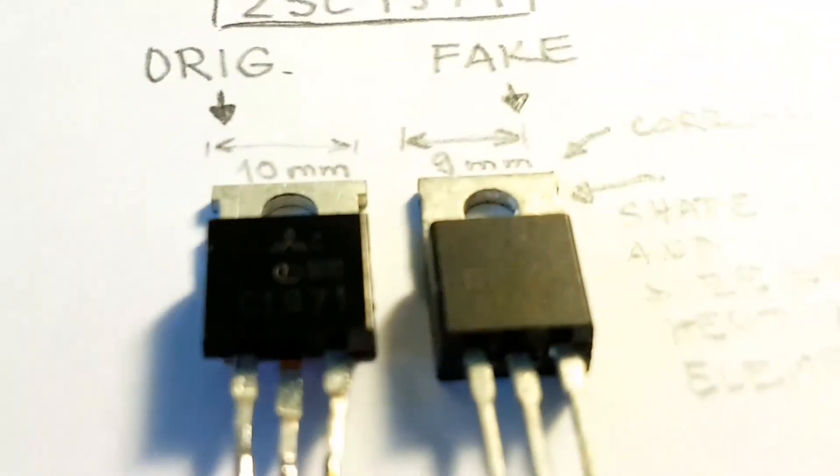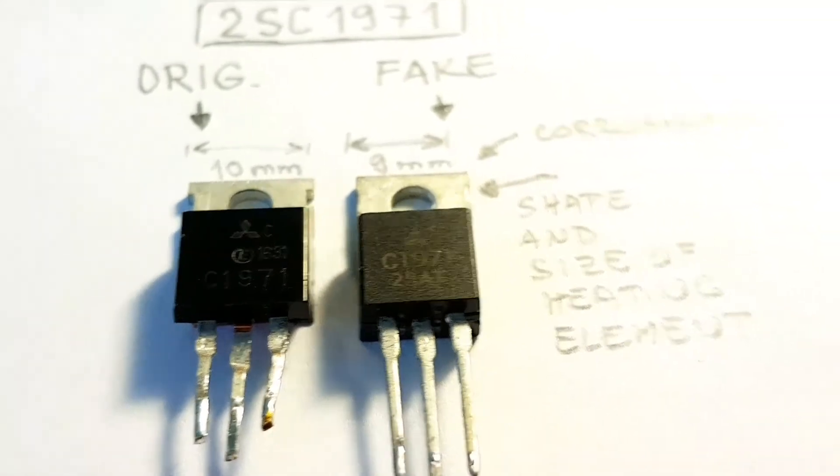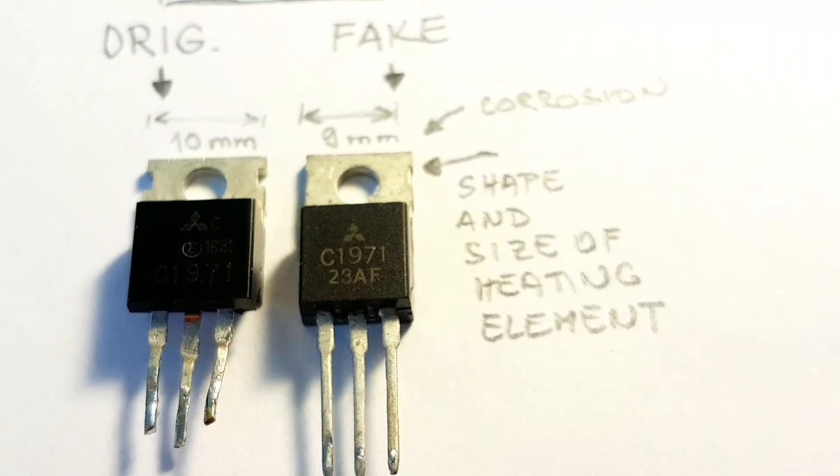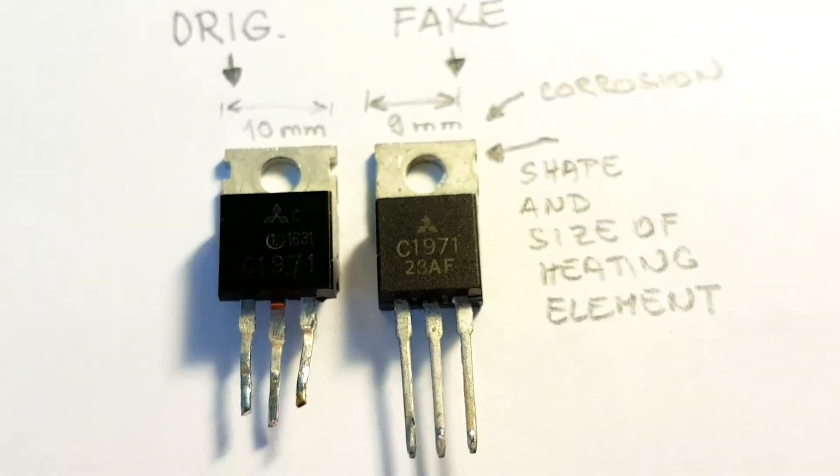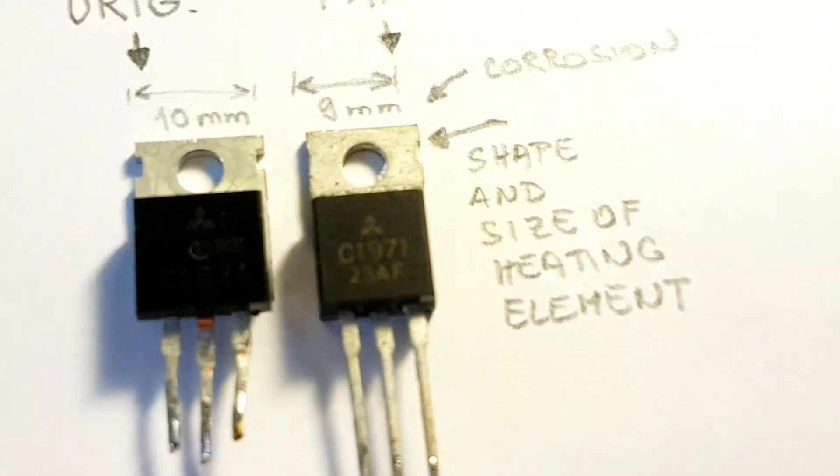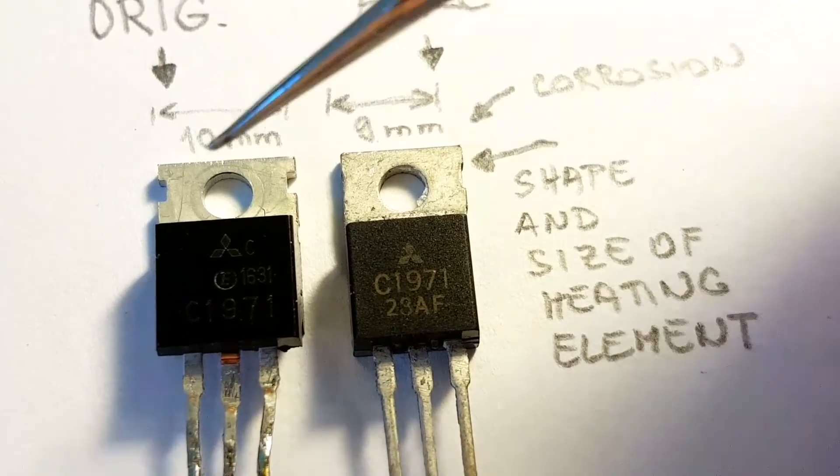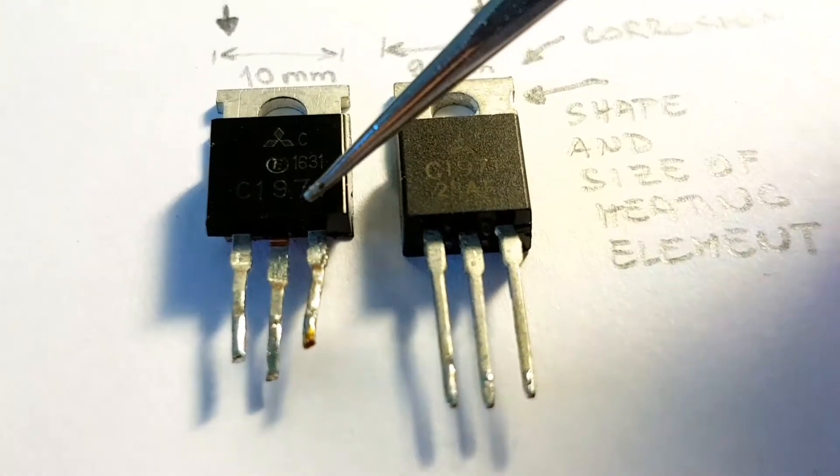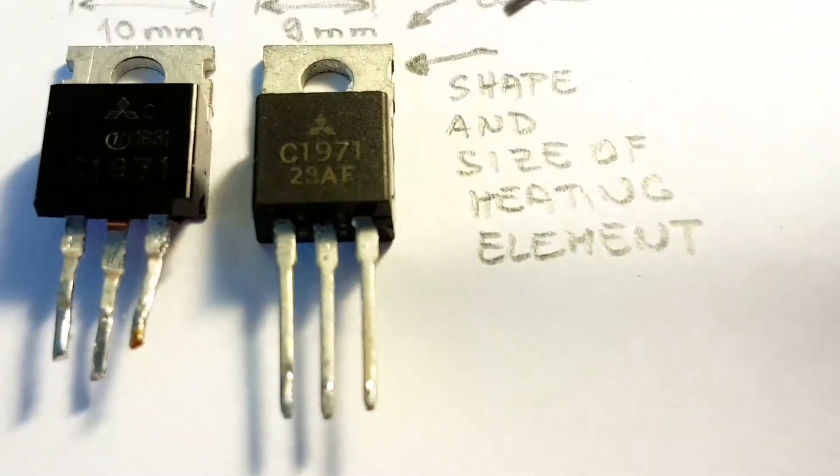You can see also better the marking - this is C1971 and also on the faked one the C1971. The mark is like Mitsubishi, here the Mitsubishi mark also here and number C1971 also here.